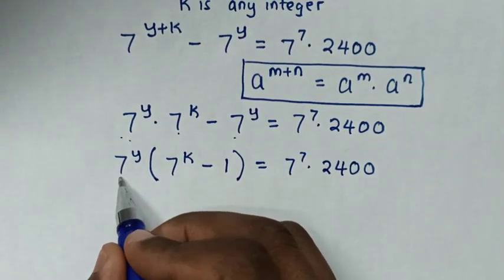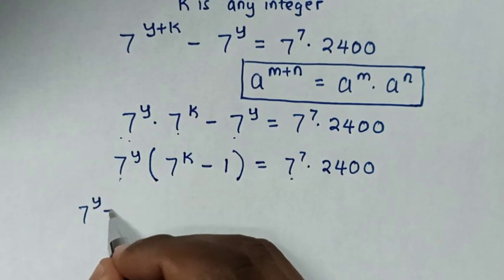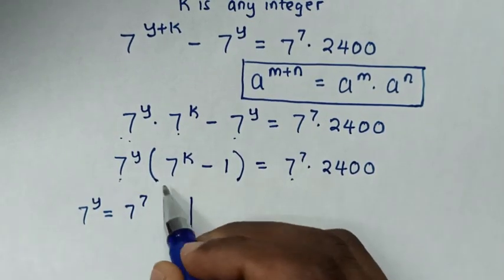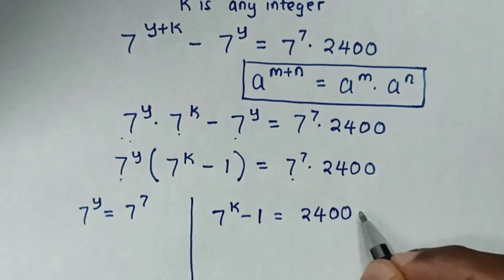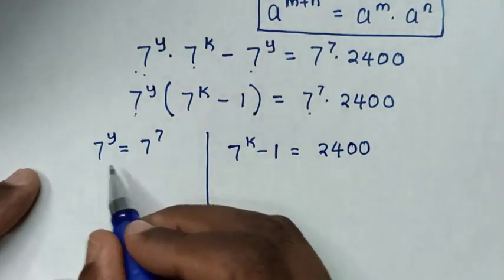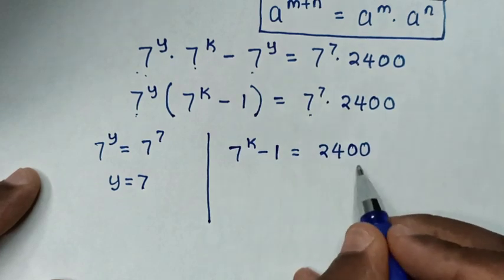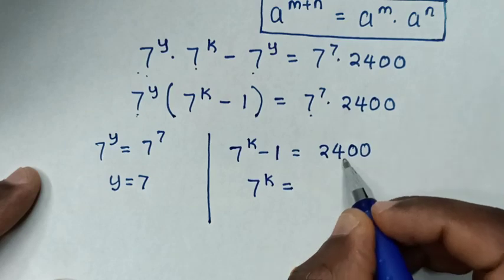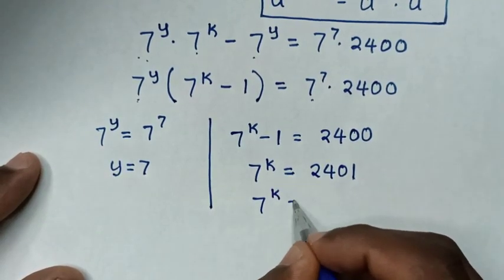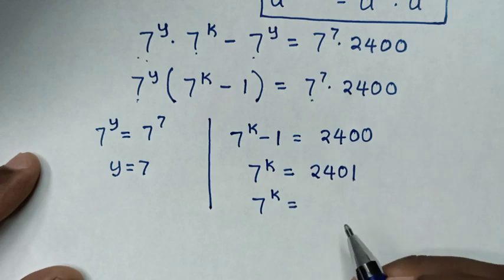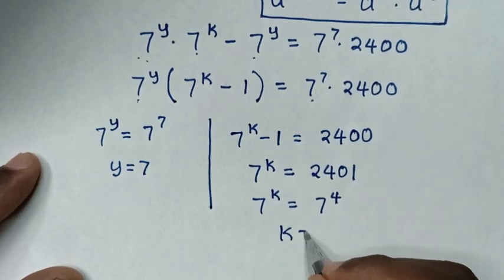Then we compare: 7 power of y is equal to 7 power of 7, and 7 power of k minus 1 is equal to 2400. From here, we compare these powers, then y is equal to 7. Then we take negative 1 to the right side, so 7 power of k is equal to 2401. Because we have the same base, we compare these powers, then k is equal to 4.